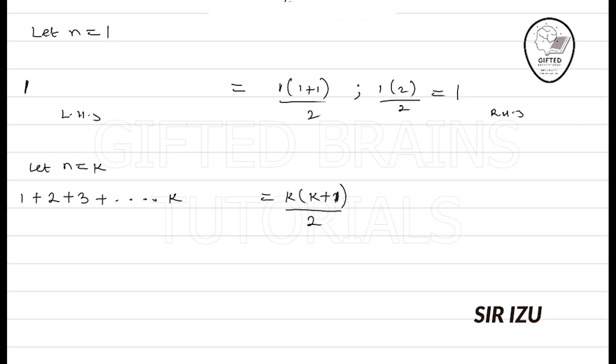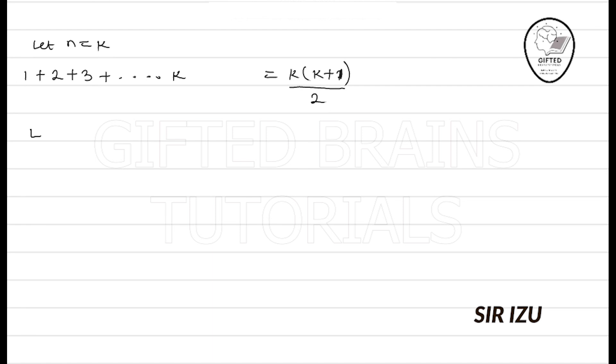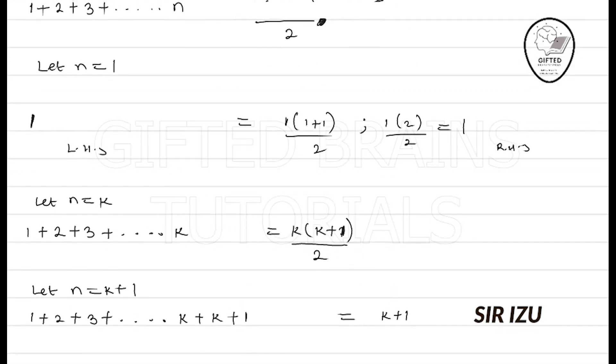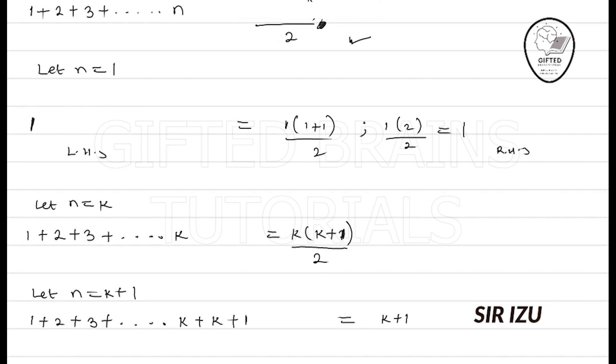The final step is let n equal k plus 1. We have 1 plus 2 plus 3 plus dot dot dot k, but we don't stop at k. Now we're moving to k plus 1. It will equal, on my right-hand side, substituting k plus 1 for n. Originally we had n times n plus 1 over 2. Anywhere I see n, I substitute k plus 1.